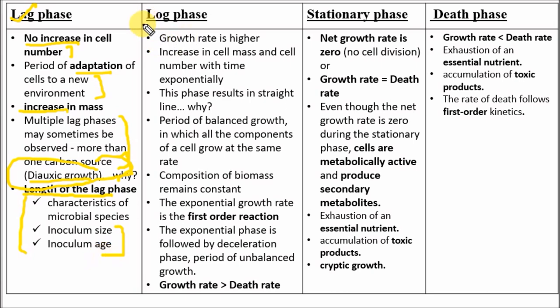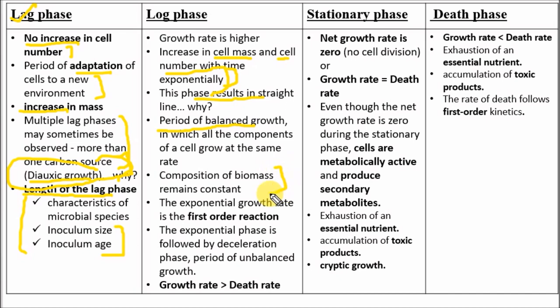In the log phase, cell mass as well as cell number increase exponentially, giving a straight line on a semi-log plot. This is a period of balanced growth — the composition of biomass remains constant because every component of the cell is increasing simultaneously. The exponential growth follows a first-order reaction.